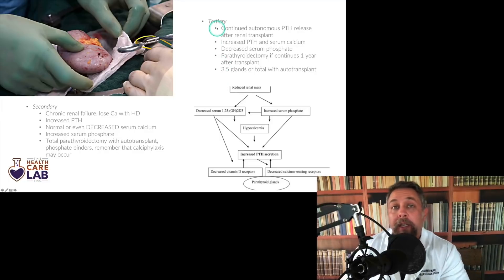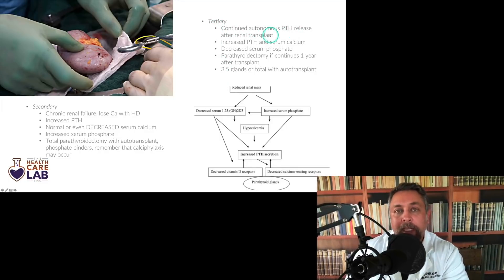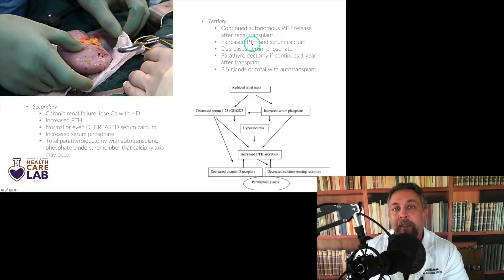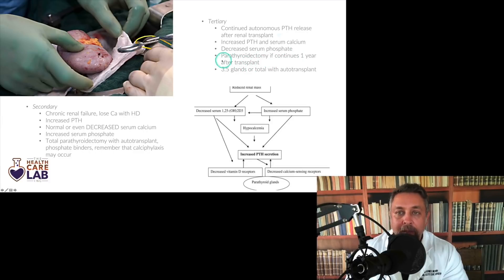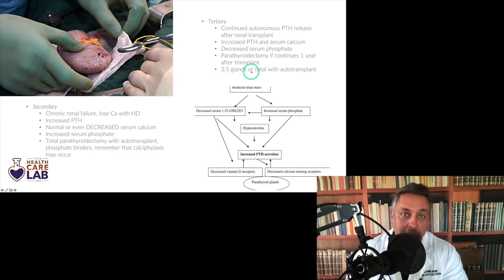Tertiary hyperparathyroidism is unique: it's continuous autonomous PTH release after a renal transplant. You have increased PTH and serum calcium with decreased serum phosphate. Parathyroidectomy is recommended if it continues for one year after transplant. Treatment is three and a half glands resected or total parathyroidectomy with autotransplant.